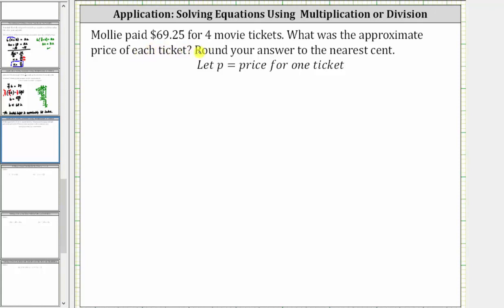Molly paid $69.25 for four movie tickets. What was the approximate price of each ticket? Round your answer to the nearest cent. And we're asked to write an equation and then solve the equation to answer the question.